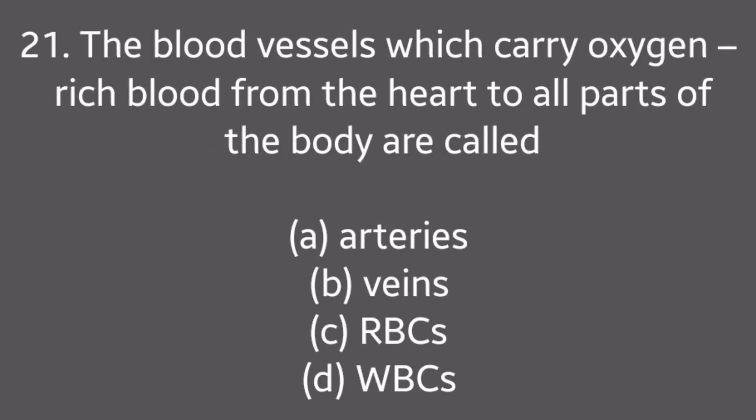Question No. 21: The blood vessels which carry oxygen-rich blood from the heart to all parts of the body are called — Arteries, Veins, Arterioles, WBC. Answer is Option A: Arteries.